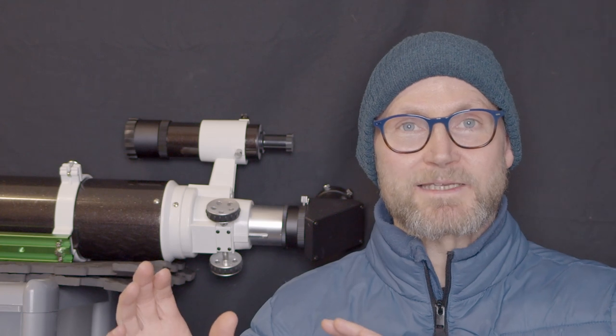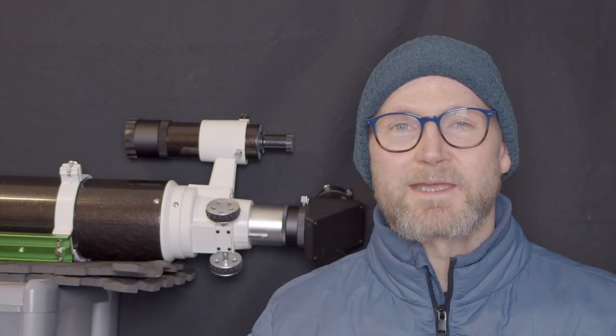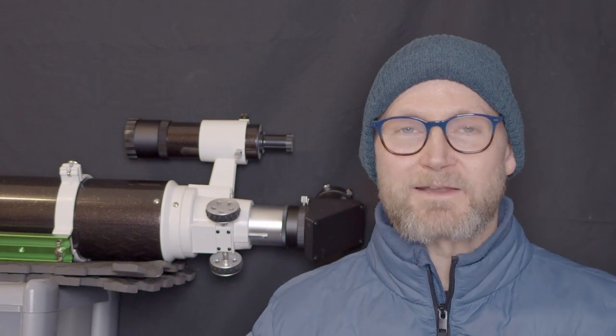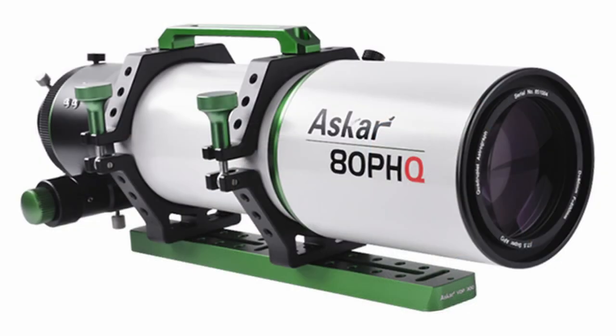So you can put a large sensor camera on the back of these, and it will give you nice round stars all the way to the corners without having to add a field flattener to the back of it. And until recent years, these were really hard to produce without any problems. And you used to have to buy really expensive ones to be reliable. But with advances,